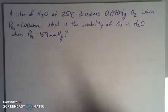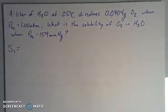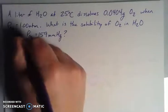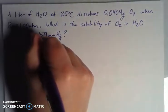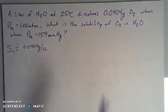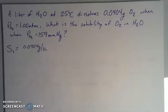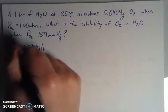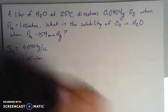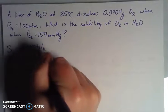So first things first, we're given a solubility. We're given this many grams in one liter. So that's my solubility of oxygen in water. I'm given an initial pressure, which is my one atmosphere.